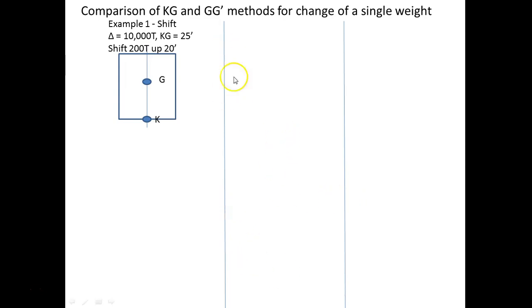In this example they don't tell you where you're shifting it from, but it really doesn't matter. If I'm going to shift 200 tons up, I'm going to increase the moment by 200 tons times the distance I move it. Let's say this is the ship — there's your keel, and there's your center of gravity at 25 feet. If I take 200 tons from here and slide it up, what's G going to do? It's going to follow that weight. So G started here but went to here — the new KG is going to be something greater than 25.